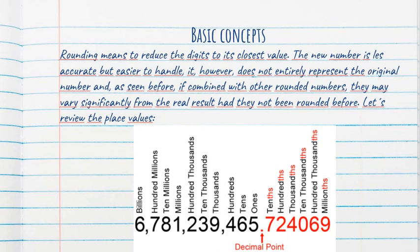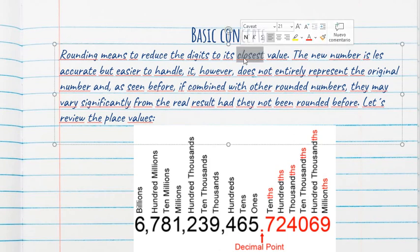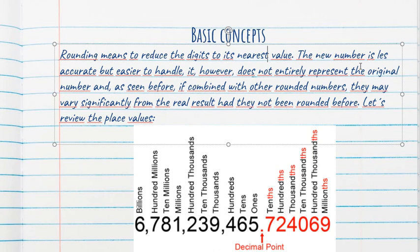Now, let's take a look into the basic concepts. Rounding means to reduce the digits to its nearest value. The new number is less accurate, but easier to handle. However, it does not entirely represent the original number, and as seen before, if combined with other rounded numbers, they may vary significantly from the real result, had they not been rounded before. Let's review the place values.